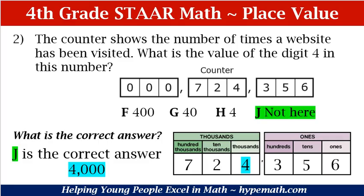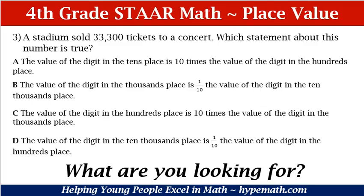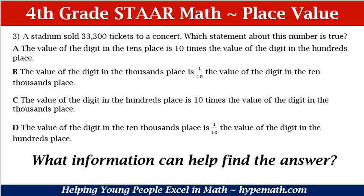Let's move to question number three. A stadium sold thirty-three thousand, three hundred tickets to a concert. Which statement about this number is true? A: The value of the digits in the tens place is ten times the value of the digit in the hundreds place. B: The value of the digit in the thousands place is one-tenth the value of the digit in the ten thousands place. C: The value of the digit in the hundreds place is ten times the value of the digit in the thousands place. D: The value of the digit in the ten thousands place is one-tenth the value of the digit in the hundreds place. What information can help us find the answer?